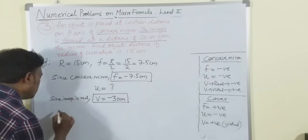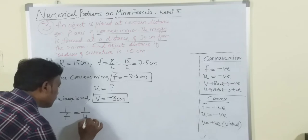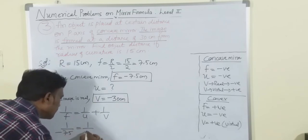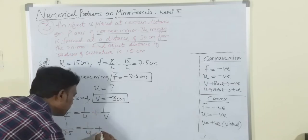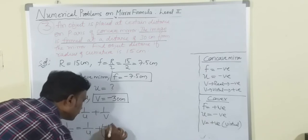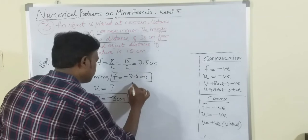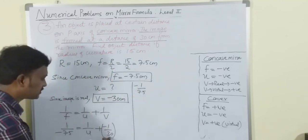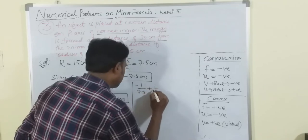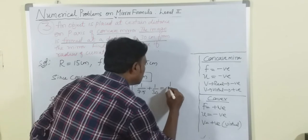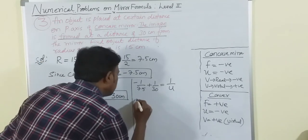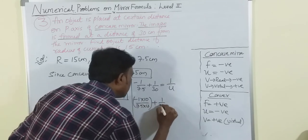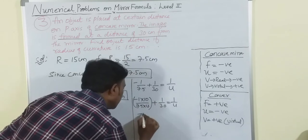Now substituting in the mirror formula: 1/f = 1/u + 1/v. So 1/(-7.5) = 1/u + 1/(-30). Rearranging: -1/7.5 + 1/30 = 1/u. Multiplying to remove the decimal: -10/75 + 1/30 = 1/u.